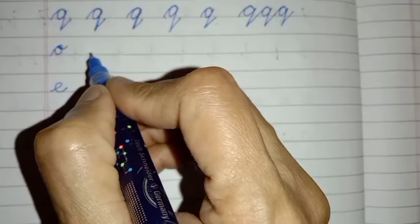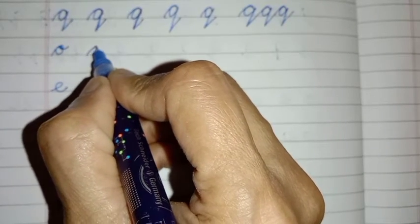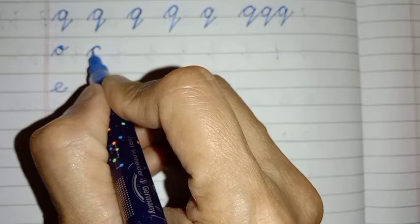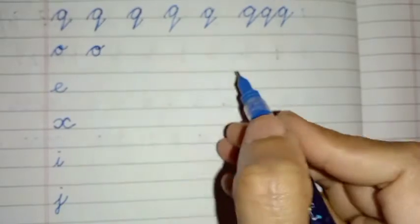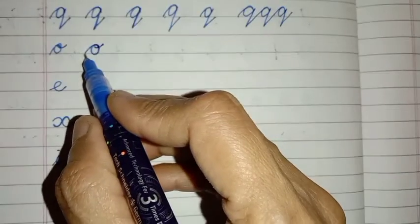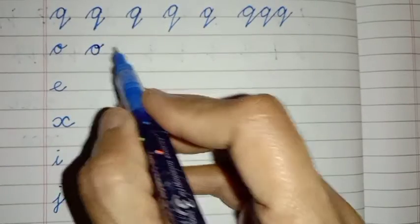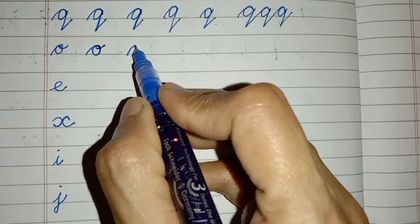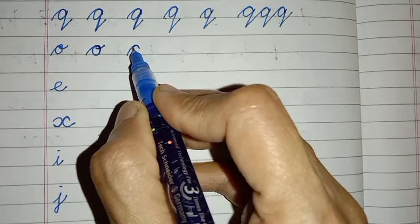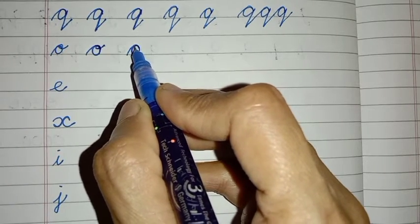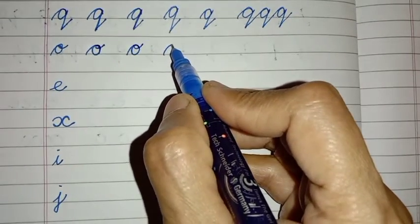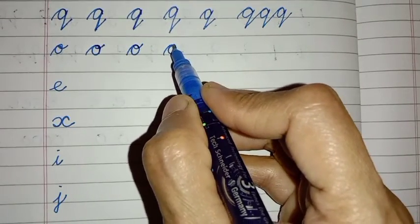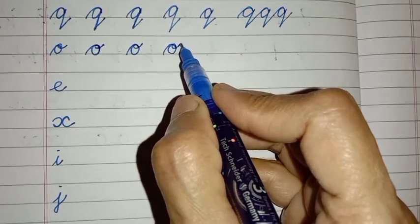So O also starts with C pattern. Here goes your C and then you come up and twist it like this. This is the trunk of the elephant and this is the tail. In O the tail goes up.